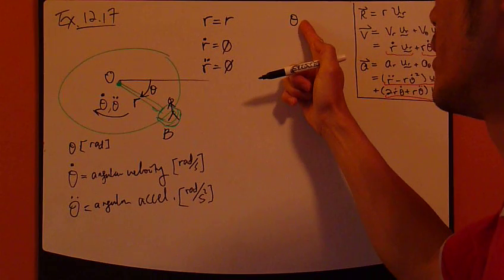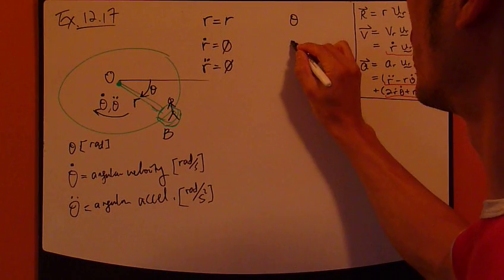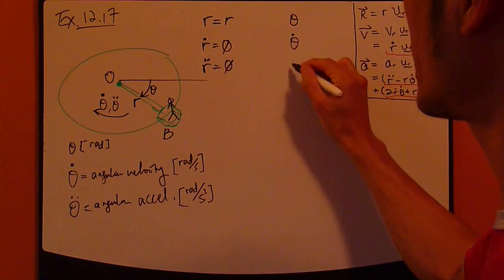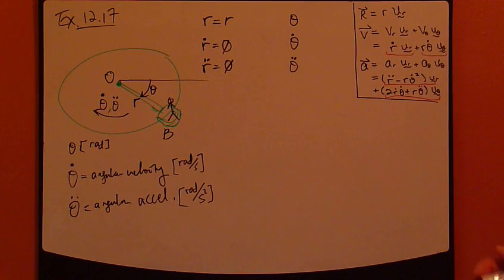So, we're to theta. Theta is just theta. And then, first derivative is just theta dot. Second derivative, theta double dot. That's all.